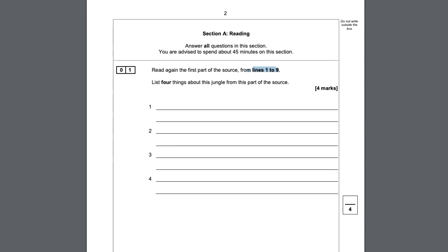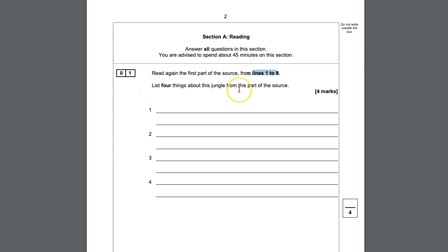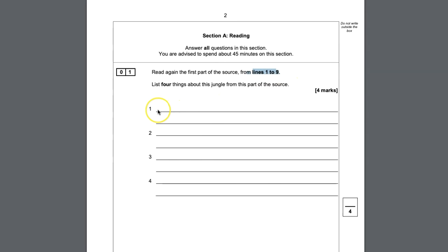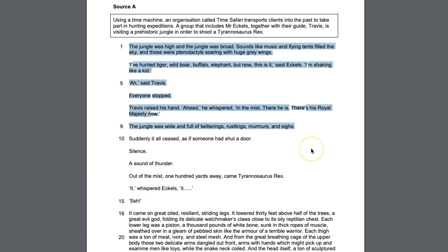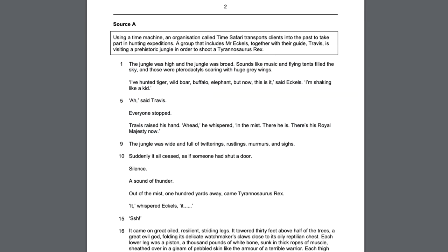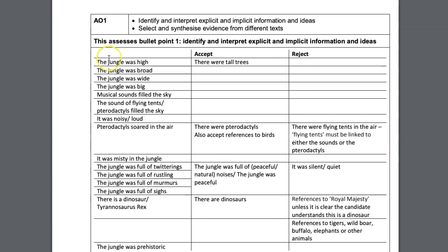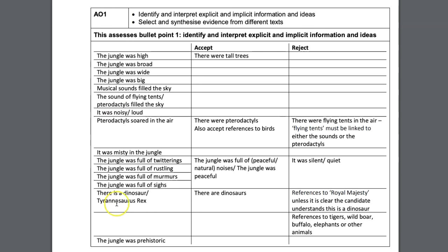In this exam paper, the question was: list four things about this jungle from this part of the source. You don't have to interpret — you're just going to quote from the passage. A word of warning: many students ignore the context box that tells you where the passage appears in the actual book. Don't do that. It's really useful to know the context, as it will be relevant in later questions. The mark scheme shows a massive list of facts you could include, and you only needed to find four, so you can see how easy the question is intended to be.